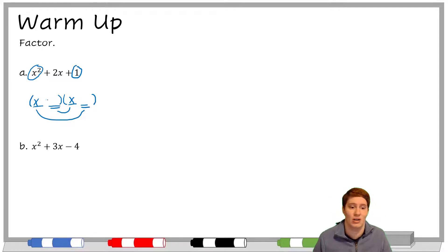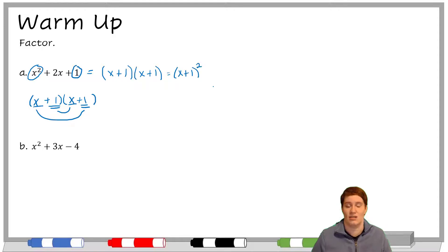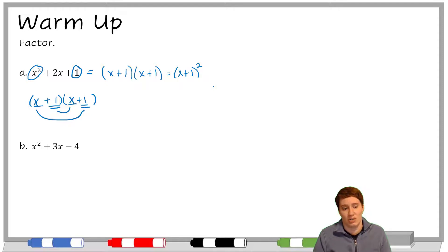So I'm going to put a plus 1 and a plus 1. What multiplies together to get x squared plus 2x plus 1 is (x+1)(x+1). You can also rewrite that as a single parentheses squared to say I have x plus 1 but I have it twice. So that's how that works.